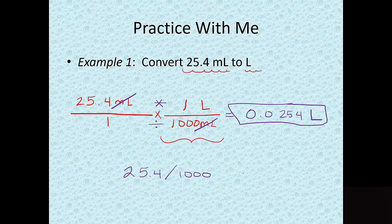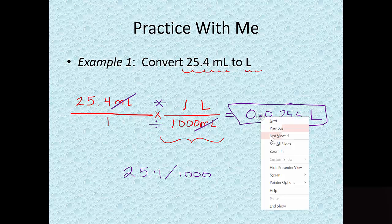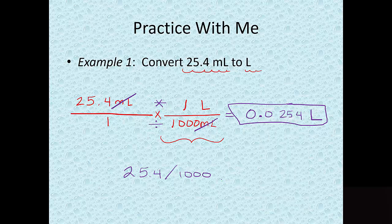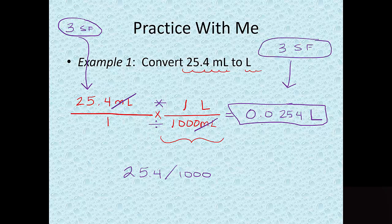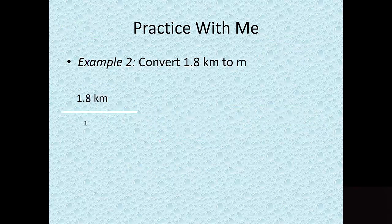Last consideration is sig figs. This number started with three sig figs. In dimensional analysis, however many sig figs you start with is how many you want in your answer. Good news — when working in the metric system, the sig figs work themselves out. The answer already has three sig figs, so we are done.